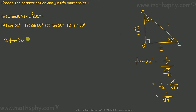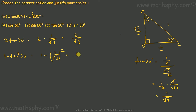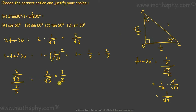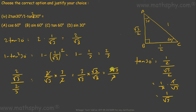So 2·tan 30 degree would be 2 into 1 over root 3, which gives you 2 over root 3. And 1 minus tan squared 30 degree would be 1 minus 1 over root 3 squared, which is 1 minus 1 over 3, which is 2 over 3. So this over this means 2 over root 3, over 2 over 3, which is 2 over root 3 into 3 over 2. The 2s cancel, giving you 3 over root 3, which can be rationalized to root 3 into root 3 over root 3, giving you 3 root 3 over 3, which simplifies to root 3. So the value for this equation is root 3.